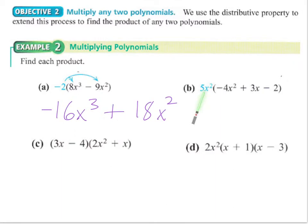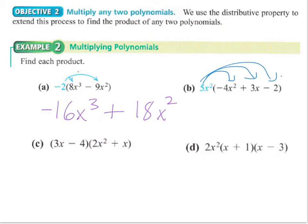For the next example, the 5x squared has to multiply the negative 4x squared, the 3x, and the 2 — all three of those. The arrows can remind you to multiply each one by the 5x squared. So I get negative 20x to the fourth, then plus 15x cubed because of 5 times 3 and the exponents adding to 3, then minus 10x squared from 5 times 2.